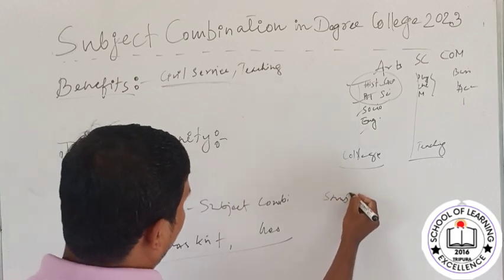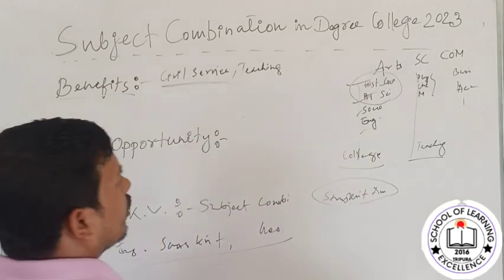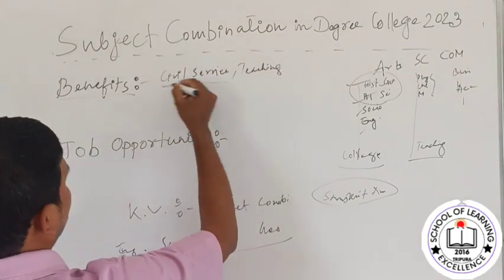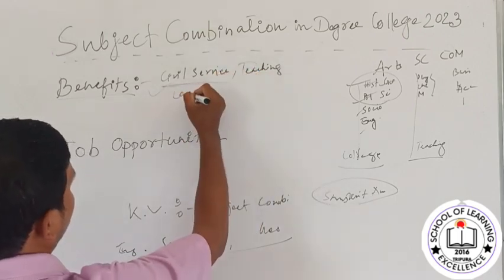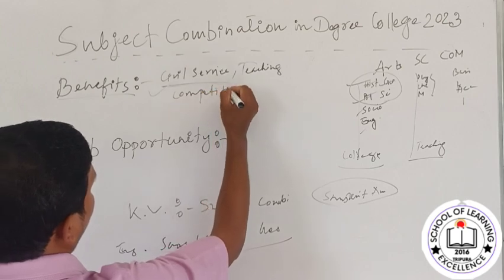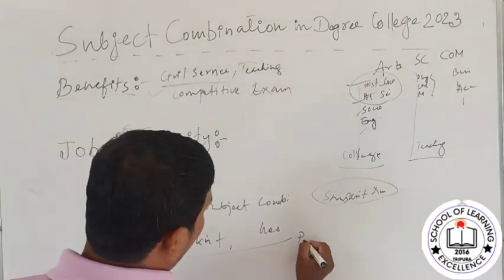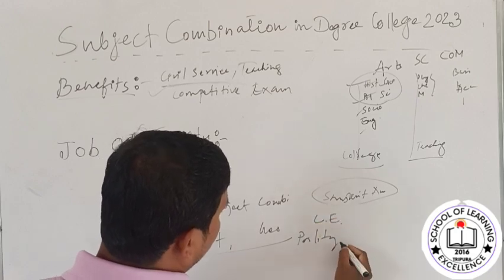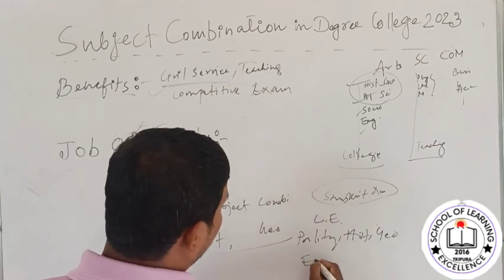Without the right subjects, you won't have anthropology or civil service options. You won't have the necessary education, benefits, or ability to take competitive exams. When you have a competitive exam, you need to understand the topics between economics and political science.